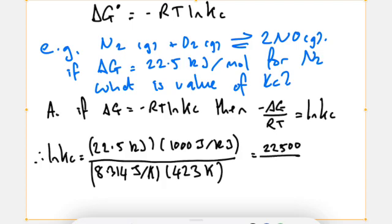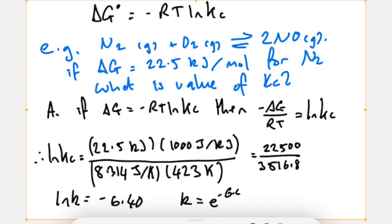Just so you can check your numbers, I've got 22,500 clearly, divided by 3516.8. I then do, to get my Kc as the subject, I need to do e to the power of that fraction, which was minus 6.4. So K is e to the power of minus 6.4, just moving the ln from left to the right. And that's going to give me an answer of, I think it's 1.6 by 10 to the minus 3, which is much less than 1, so the equilibrium lies very much to the left-hand side.